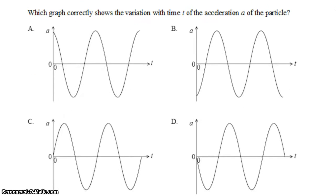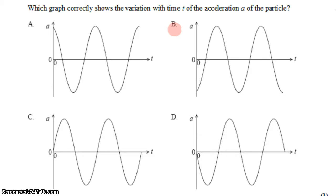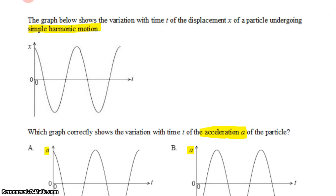The question asks, which graph correctly shows the variation with time t of the acceleration of the particle? So which one of these accelerations is correct, given this graph of position?